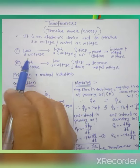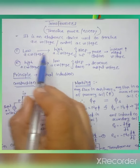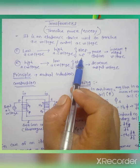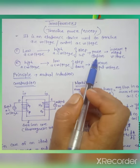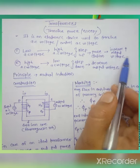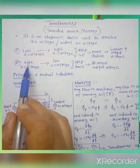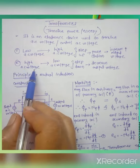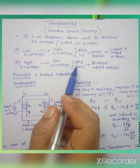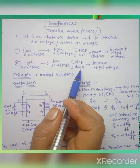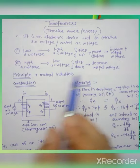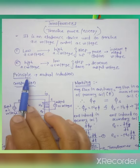Transformer can convert low AC voltage into high AC voltage, called as step-up transformer, which is used in power stations — in that, the output voltage is increased. Second case, transformer can transfer high AC voltage into low AC voltage, called as step-down transformer — in that, the output voltage is decreased.